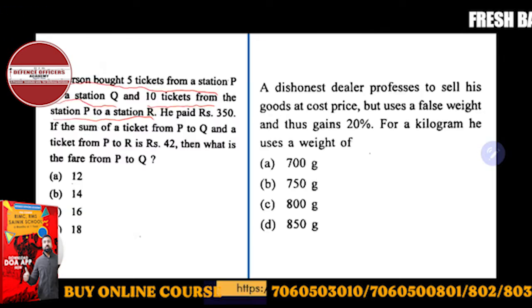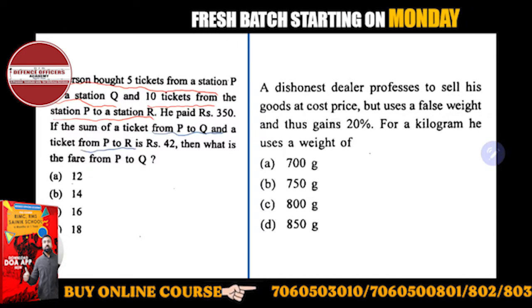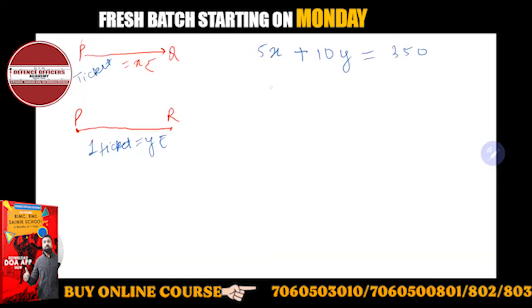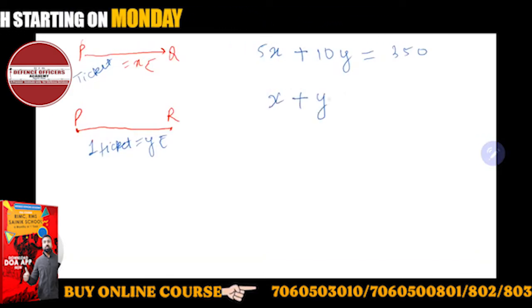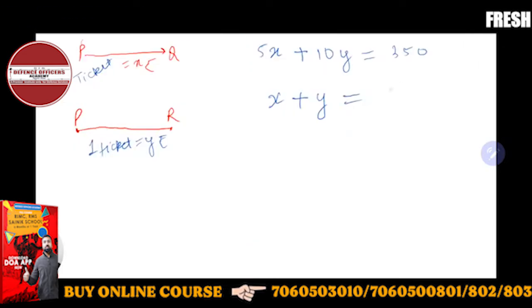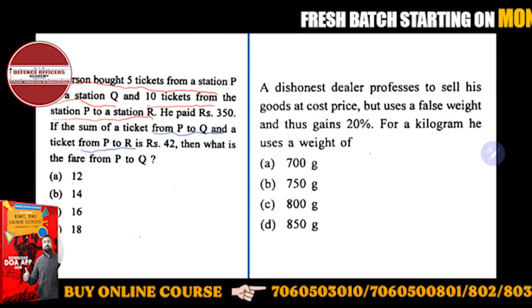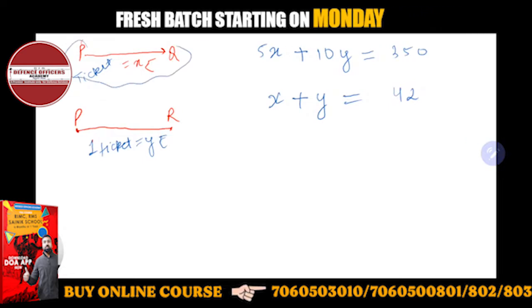They're asking: if the sum of ticket from P to Q and ticket from P to R is rupees 42, then X plus Y equals 42 rupees. Then you have to find the price of ticket from P to Q. It means you have to find X.